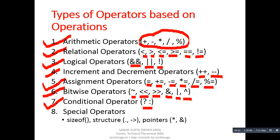Next and last type is special operators. Here, we have the sizeof operator, structure operators, and pointer operators. So, based upon operations, there are total eight types of operators available, which can be used to perform a particular or specific operation in an expression.